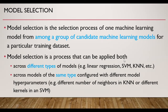Model selection is a process that can be applied both across different types of models — for example, linear regression, logistic regression, support vector machine, k-nearest neighbor — or across models of the same type but configured with different model hyperparameters, such as different number of neighbors in k-nearest neighbor or different kernels in support vector machine.